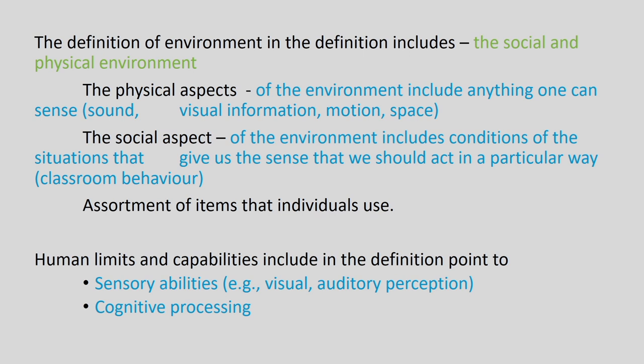When designing environments, two kinds of environments should be looked into. Physical aspects of environment include things that people or operators can sense — for example, sounds, visual information, motion, space. So, when designing environments under which humans and machines interact, these factors should be considered.